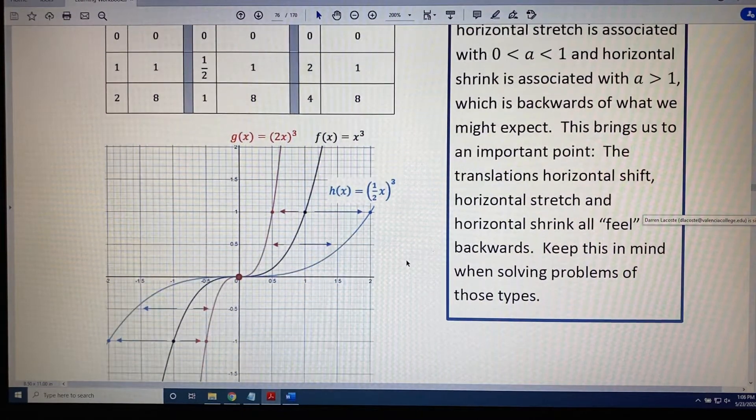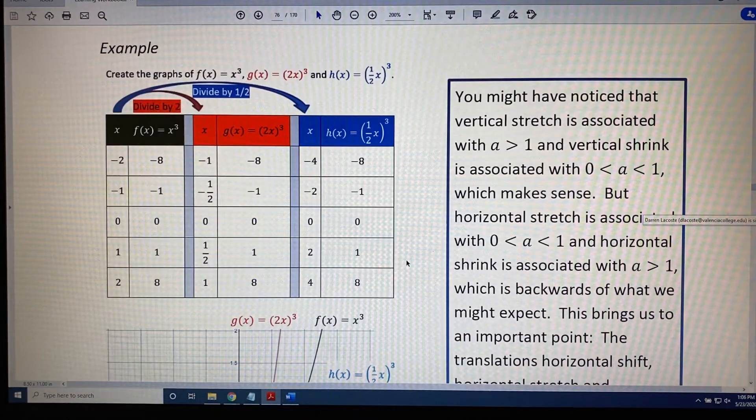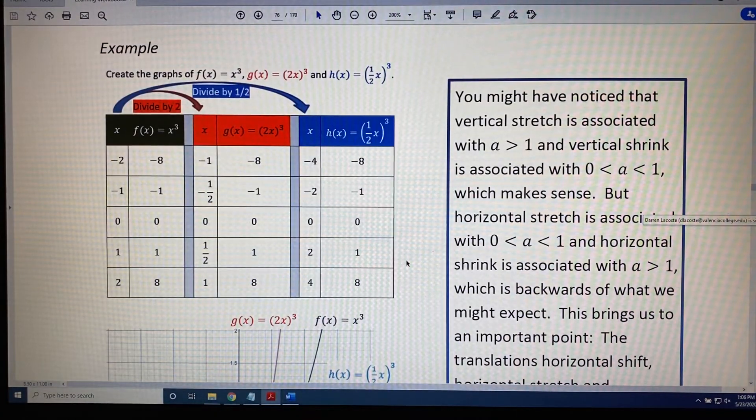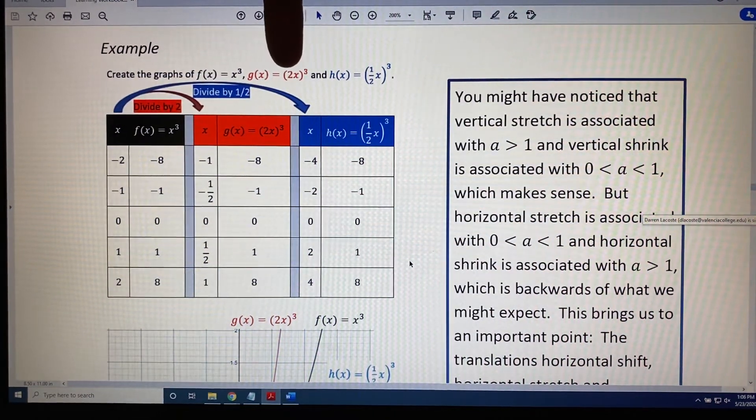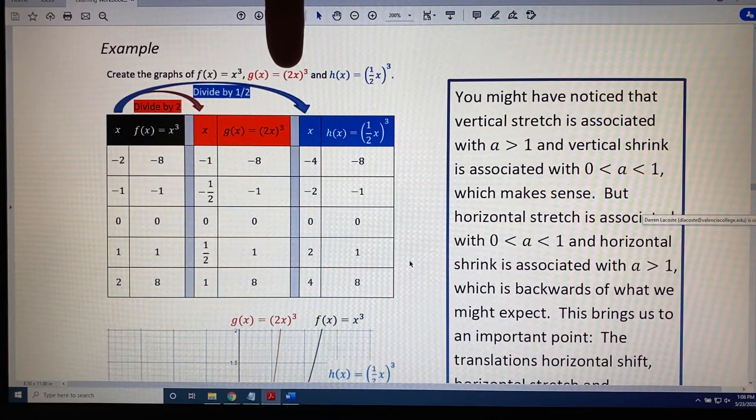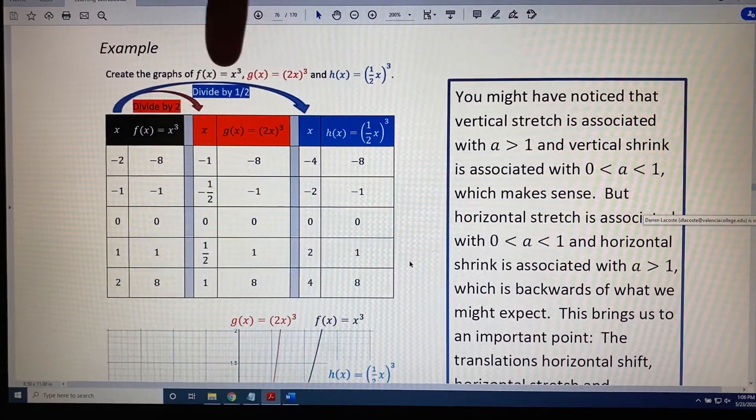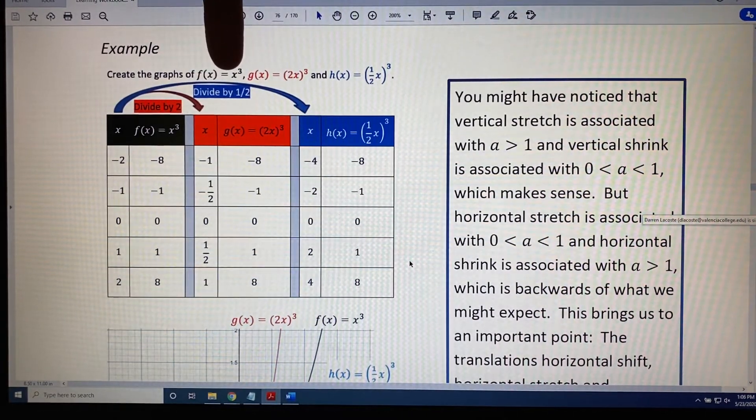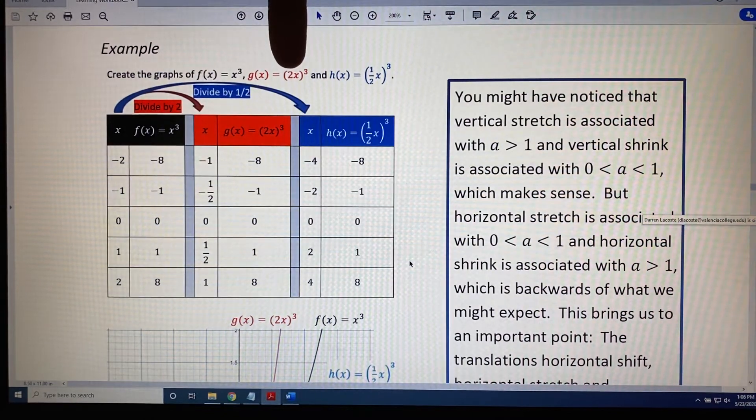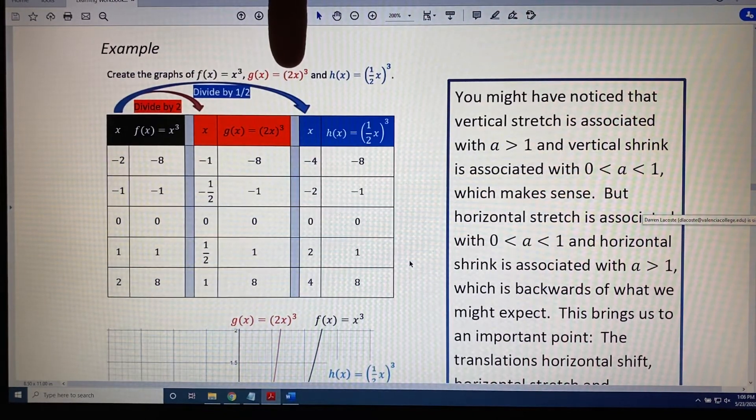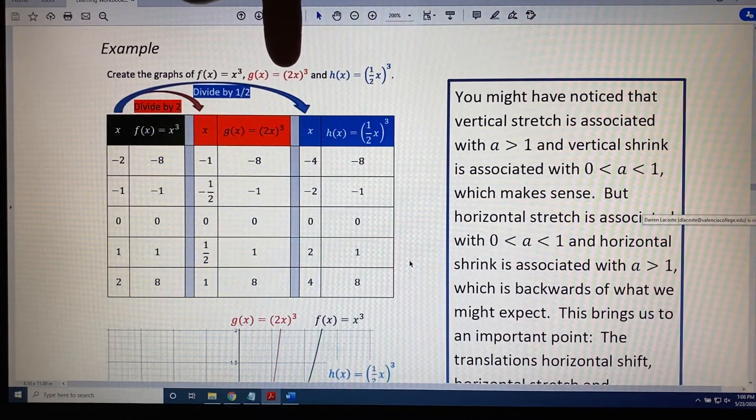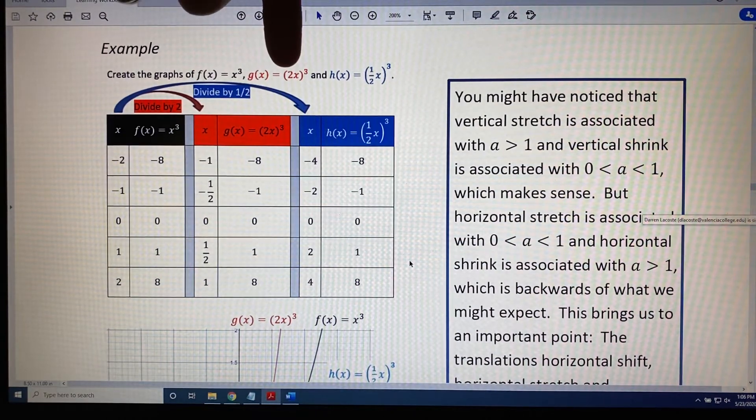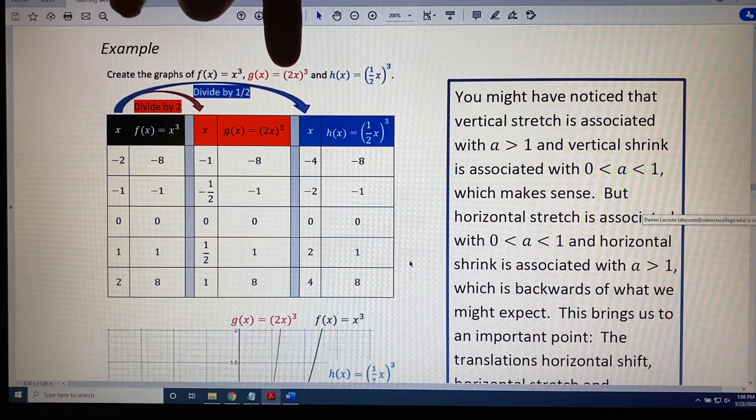Now we're going to turn our attention to the next graph, g(x), the red graph. We notice that f(x) and g(x) are different because of the 2. That 2 is inside close to x. That means that x was replaced with (ax) where the value of a is 2. This is indicative of a horizontal stretch or shrink. Because the value of a is greater than 1, that makes it a shrink.